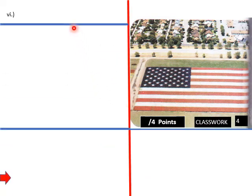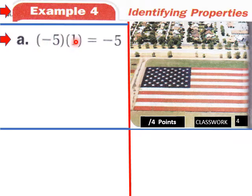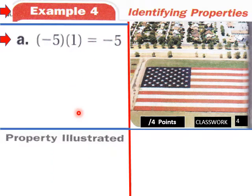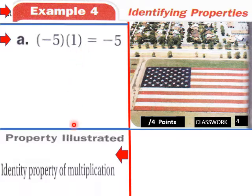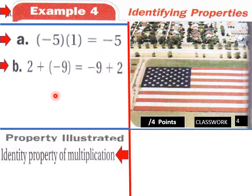Let's go into Example 4: Identifying Properties. For part a, negative five times one equals negative five. Which property is illustrated? It's the identity property of multiplication, because one times negative five equals negative five.